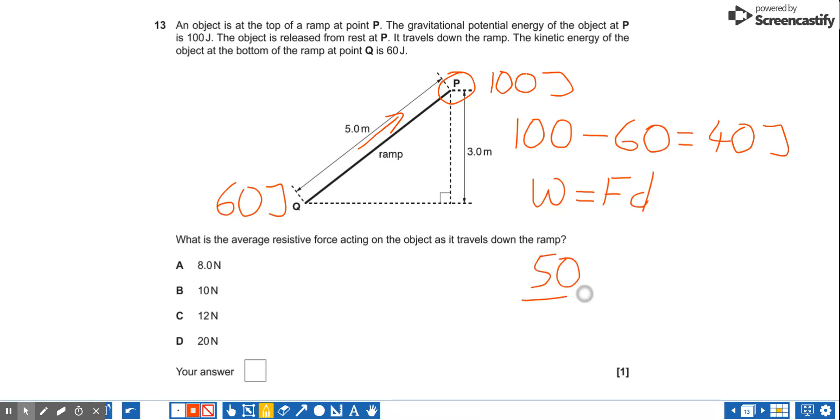So if we have a look, I've got my 50 joules divided through by my 5 meters and that will equal my resistive force, which is going to be 10 newtons. So my answer is B.